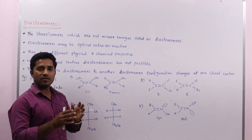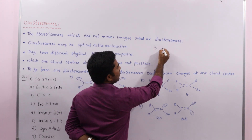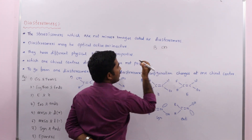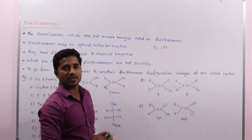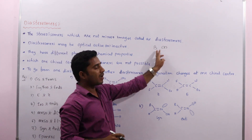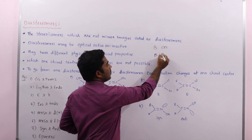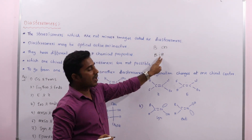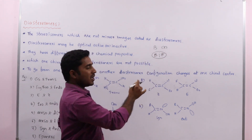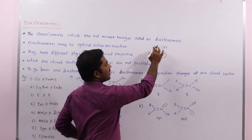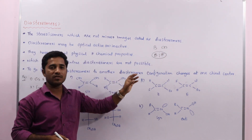Using an alphabet analogy: if you take the letter 'B', its mirror image still looks like 'B', so those two are not mirror images — those are diastereomers. But if you take 'B' oriented so the two are non-superimposable mirror images, those are called enantiomers. So that is the difference between enantiomers and diastereomers.